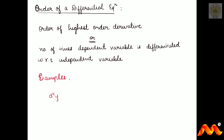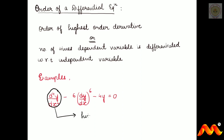Let's look at some examples. First: d⁴y/dx⁴ − 6(dy/dx)⁶ − 4y = 0. Here the highest order derivative is of order 4, so this is a differential equation of order 4.